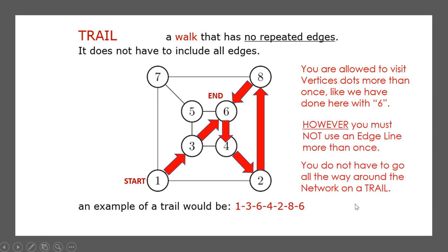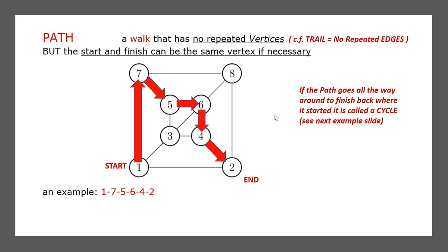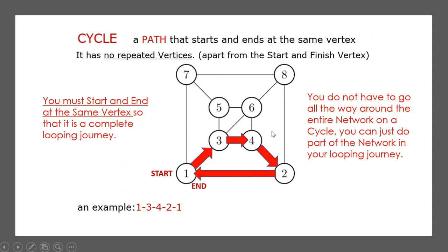On a trail, you don't have to go all the way around the network. You can just go through part of the network, and you don't have to finish at the same place you started. A path is kind of like a trail, but this is where we don't repeat vertices — we don't visit the same dot more than once. Here's an example of a path where we go from one to seven to five to six to four and down to two, visiting each dot only once. That's what the courier driver wants — only go to each house once.